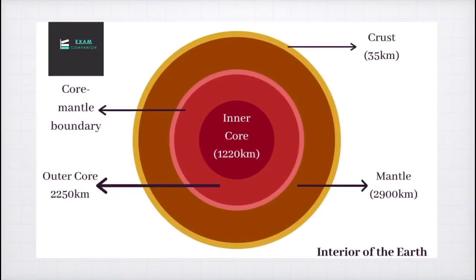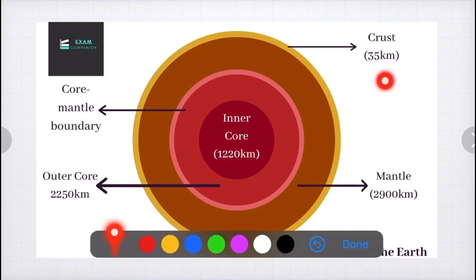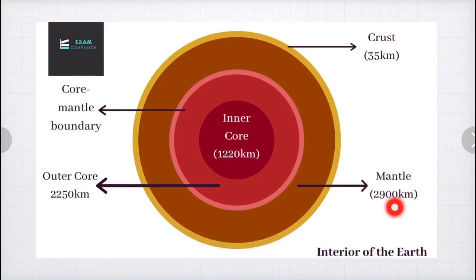Now students, this is the diagram of interior of the earth. Here you can see that the first layer or the outermost layer that is in mustard color is the crust and it is 35 kilometers deep. The next layer that is the brown colored layer is 2900 kilometers in thickness and it is the mantle. Next, we have the core-mantle boundary. Now this is not a layer, it separates the core and the mantle. And finally, we have the outer core, which is 2250 kilometers thick and the inner core, which is 1220 kilometers deep.